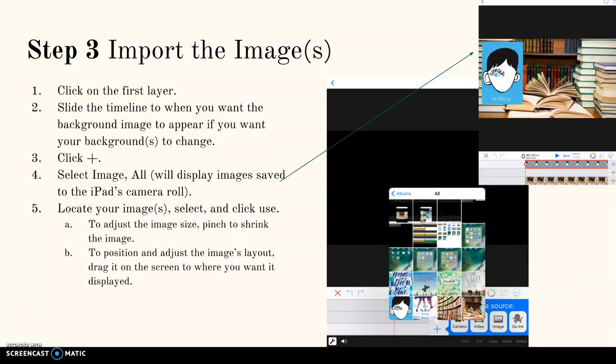Step 3 is importing images. Click on the first layer, select the timeline, slide the timeline to when you want the image to appear. Click the plus sign, select an image, and click all. This will also display images saved to the iPad's camera roll. Locate your image, select it, and click use. Your image will import in full size.